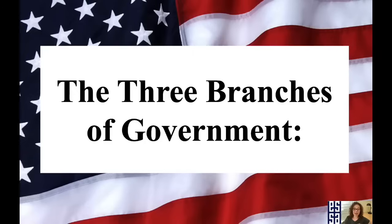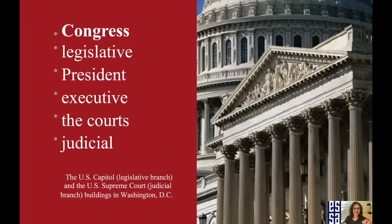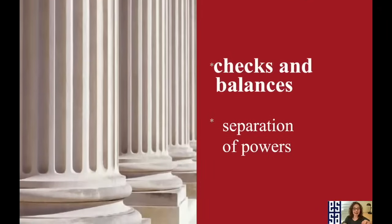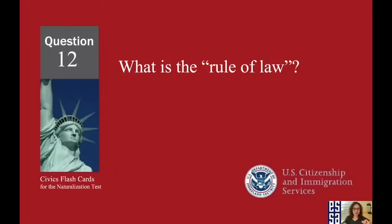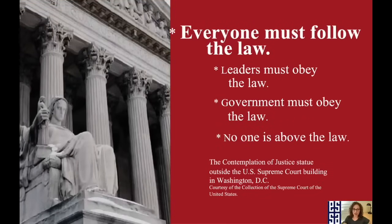There are three branches of government. Name one branch or part of the government — I chose Congress. What stops one branch of government from becoming too powerful? We have checks and balances. What is the rule of law? Everyone must follow the law.